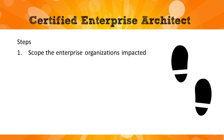Now the steps, which are what's most important in this phase. Step one is to scope the enterprise organizations impacted. As an architect or architecture group, you have a domain in which you operate — perhaps a single department within a larger organization. Your main work covers the businesses that are your clients and the applications under your purview. That defines your organizational scope.